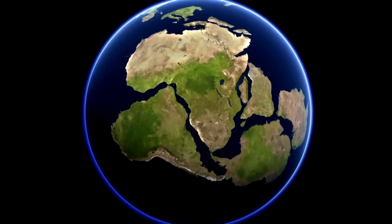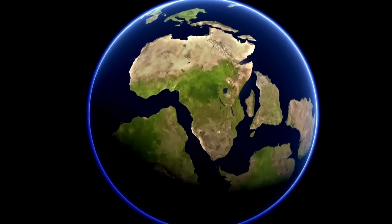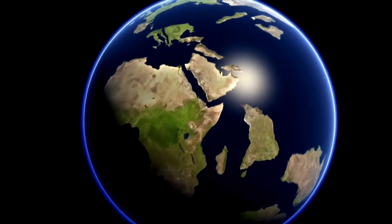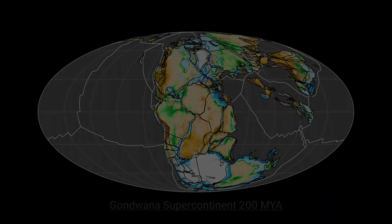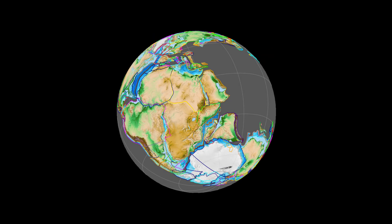The Mozambique Channel was formed due to the breakup of the supercontinent Gondwana, a supercontinent that existed around 200 million years ago. At that time, Madagascar, Africa, India, Antarctica, and South America were all joined together. Madagascar was connected to Africa's east coast, with no ocean between them.